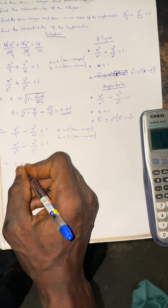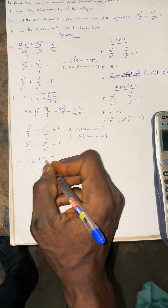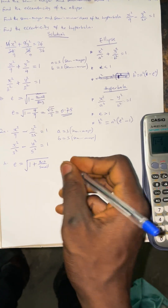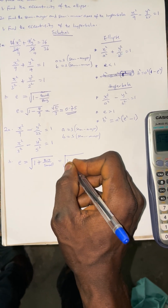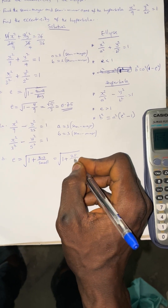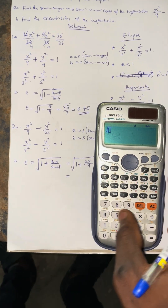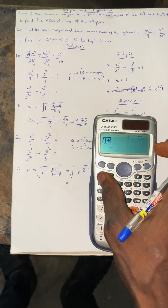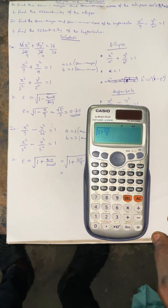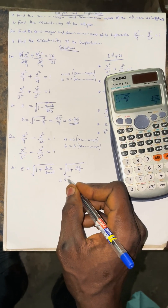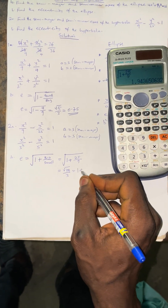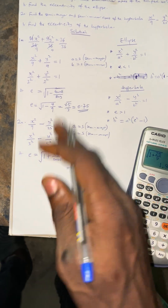For the eccentricity of the hyperbola, use the shortcut: eccentricity equals square root of 1 plus (larger value over smaller value). From the equation we have 9 and 25; the bigger is 25 and the smaller is 9. So eccentricity equals square root of 1 plus 25 over 9, which gives square root of 34 over 9, and expressed as a decimal that is 1.94.